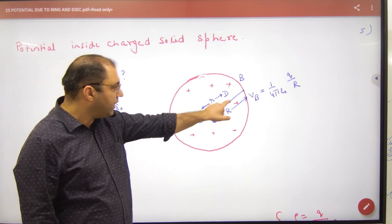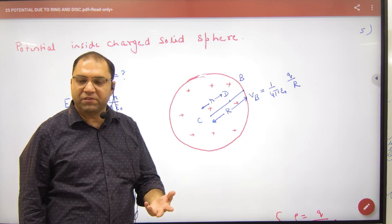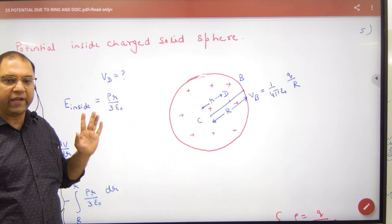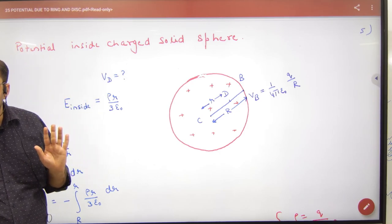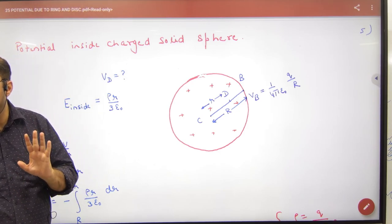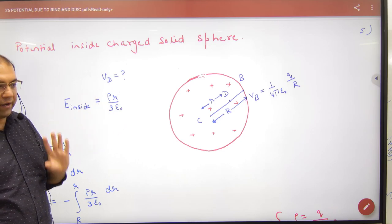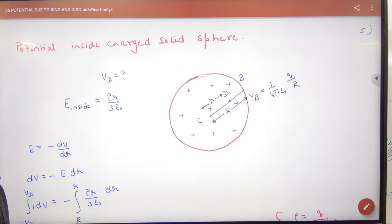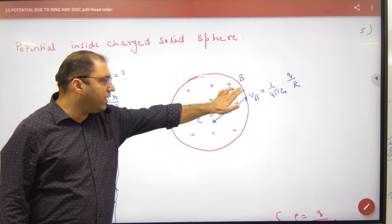E formula, if I ask D point on... D point E value rho r by 3 epsilon not. What point is clear? Rho into small r by 3 epsilon not. So what is E inside? OK, here E inside, what is next? Here dV change.